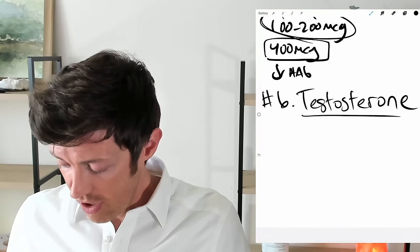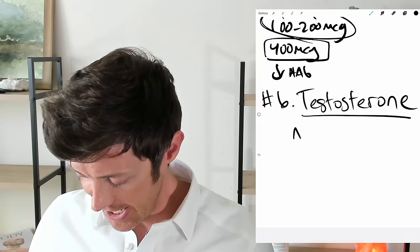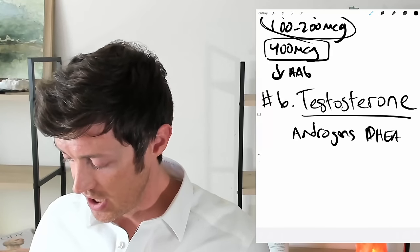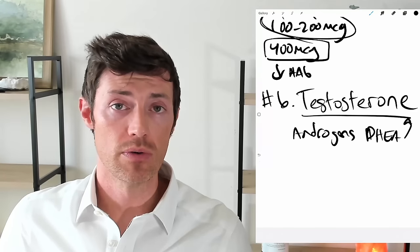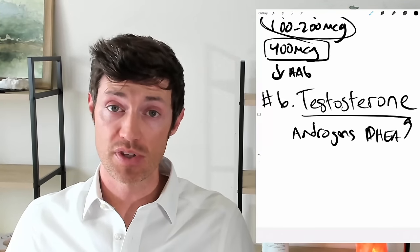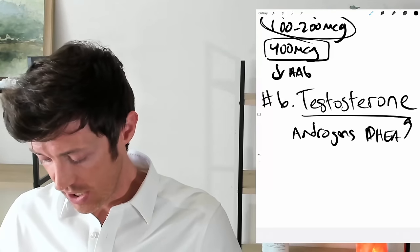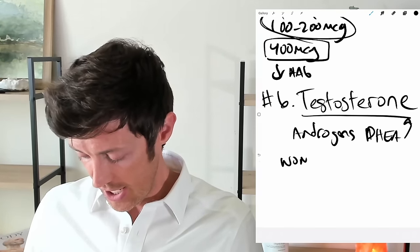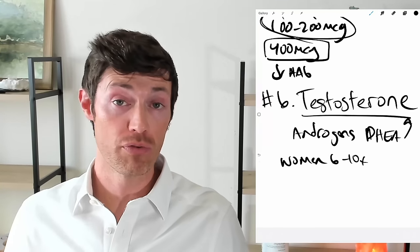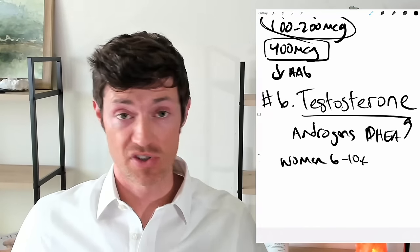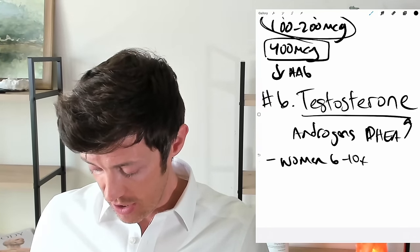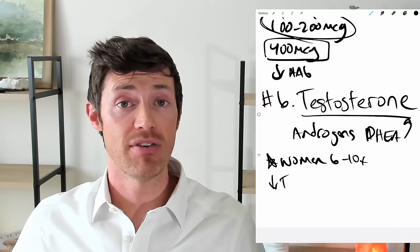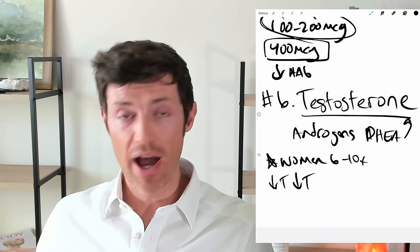Number six is maybe one you haven't heard of — the use of testosterone, or really any androgens, which would include DHEA, which is a weaker androgen. Testosterone and androgens in general seem to have a calming, beneficial effect on the immune system. We know this because both men and women get Hashimoto's thyroiditis, but women get it six to ten times more frequently than men. Part of that reason is because women at baseline have a lower testosterone level, and having hypothyroidism reduces that testosterone level further — a double whammy.